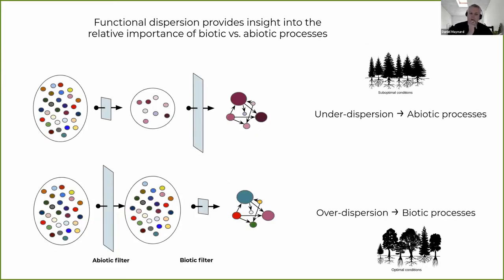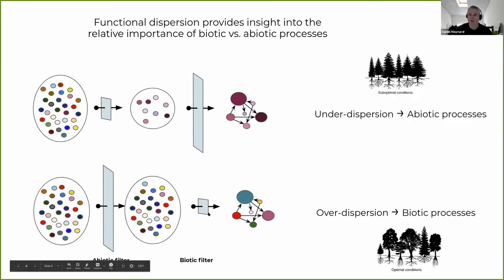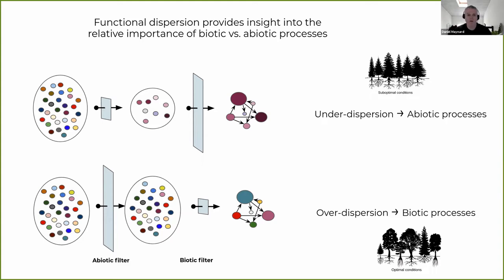Through this null model toy diagram, we're really talking about how permissive and how restrictive these filters are. In the first case, you have a very restrictive abiotic filter — really harsh environmental conditions — and only things very similar in terms of traits pass through. This is called under-dispersion, and it's often seen as a proxy for the importance of abiotic conditions. Conversely, when you have a very permissive abiotic filter and a very restrictive biotic filter due to competition, what we're left with are species that are functionally very different — very unique compared to a random sample. This disentangling of biotic and abiotic processes can be a little dubious for multiple reasons.